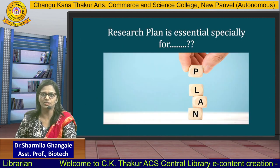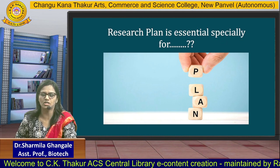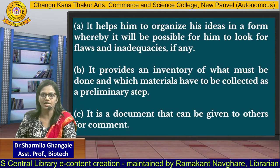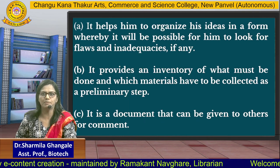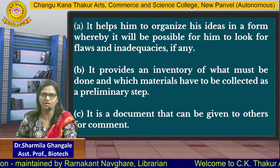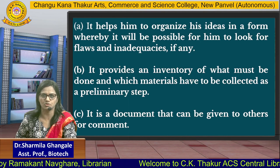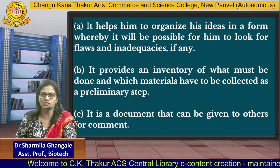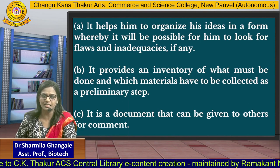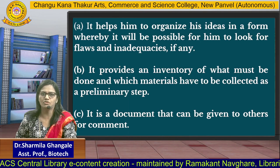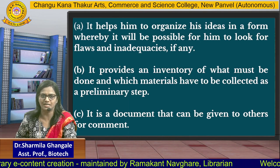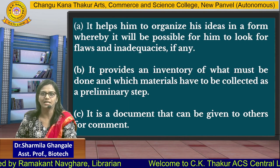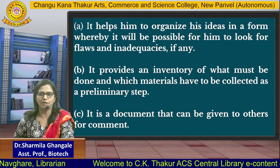What is the important thing we need to know? Research plan basically helps the researcher to organize his ideas. It will be possible for him to look after the flaws and inadequacies, if any. Before proceeding with the research process, it is necessary that we go through the research plan. It provides an inventory approach — that is, what is to be done, what materials have to be adopted, or what techniques are to be adopted. Which material has to be taken for the research work could be decided by means of the research plan. It is a document that can be given to others for comment.